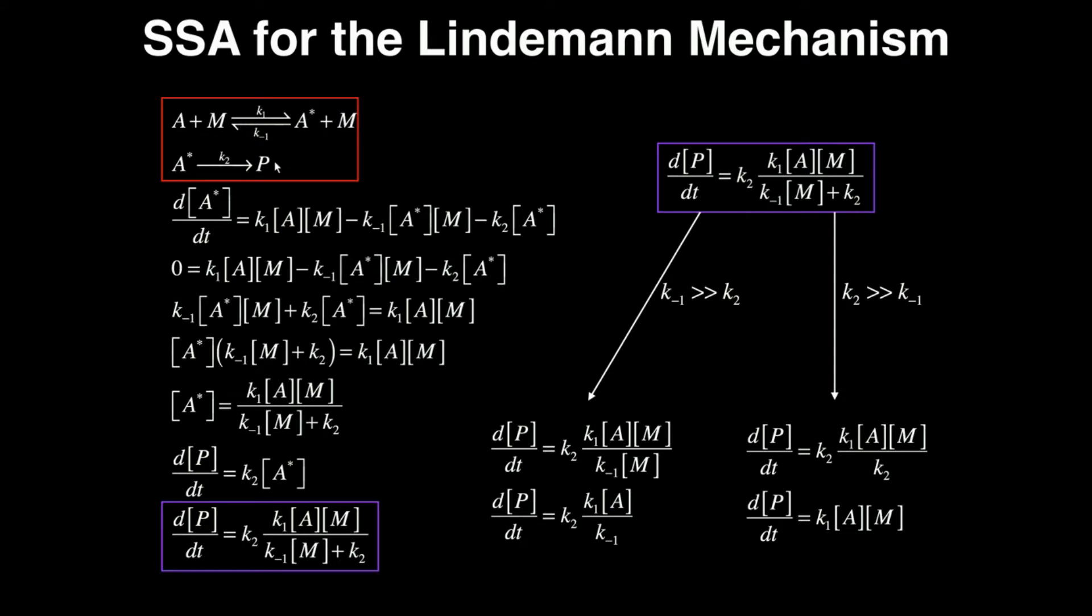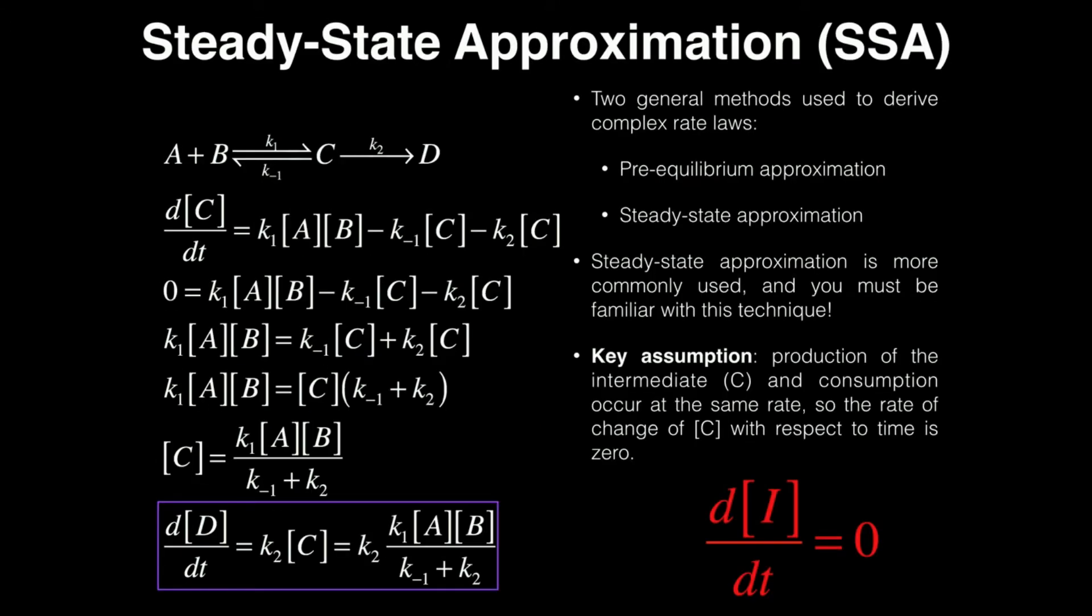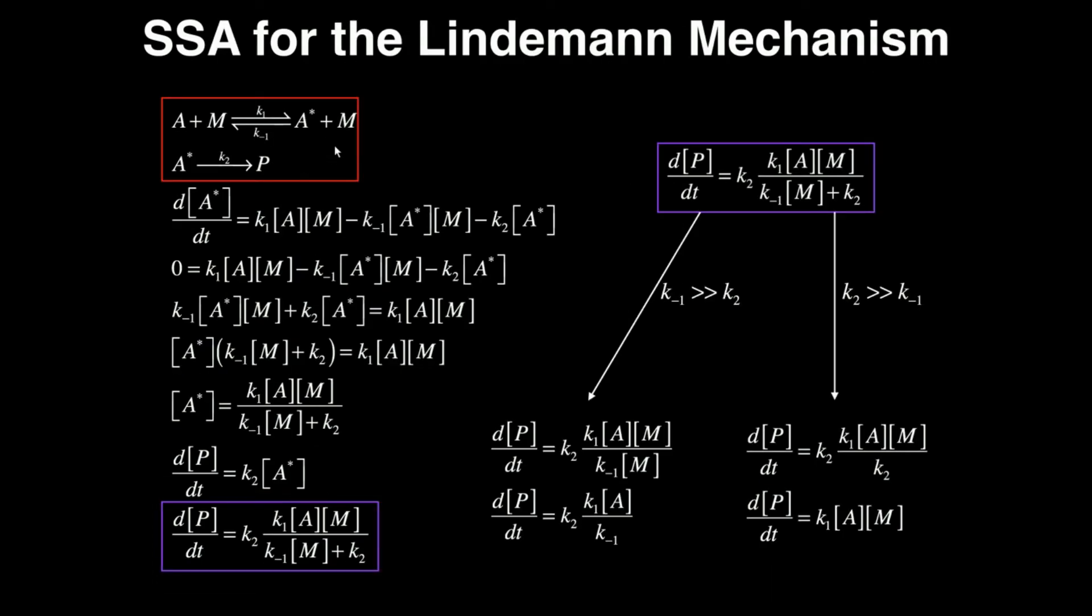If you need help with steady state approximation, I recommend you go back and watch that video in my playlist because we're going to use this assumption that the rate of change of the concentration of the intermediate with respect to time is zero. Now, what's my intermediate here? It's A star because A star is both consumed from the product and formed through the reaction of K1. So A star is my intermediate.